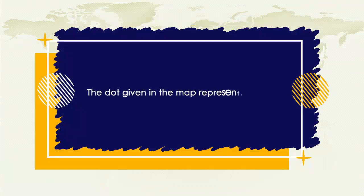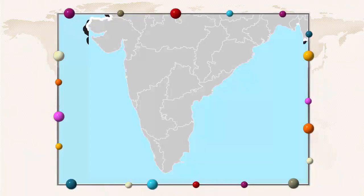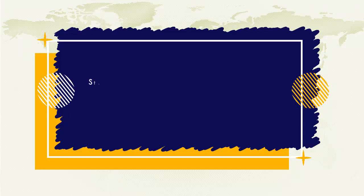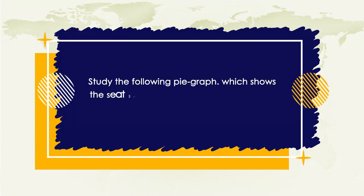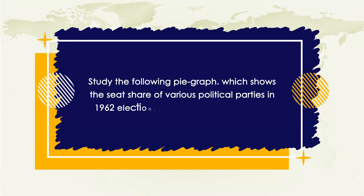The dot given in the map represents Chennai. Study the following pie graph which shows the seat shares of various political parties in the 1962 elections.